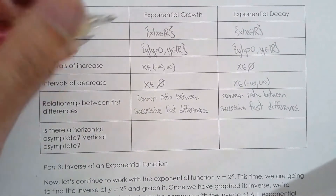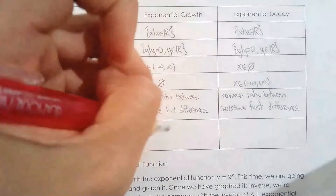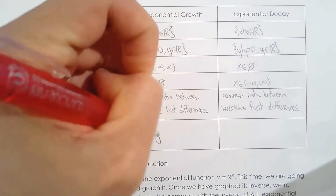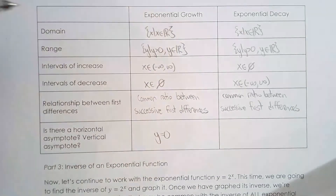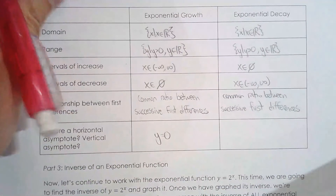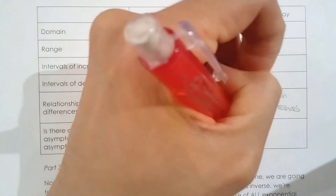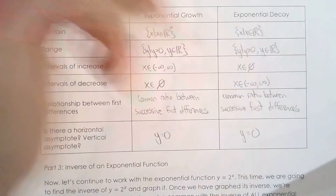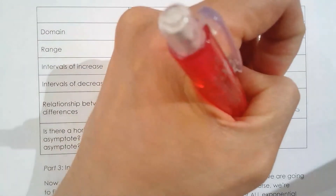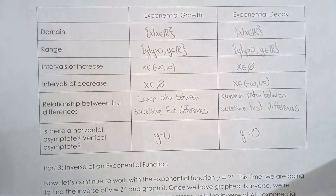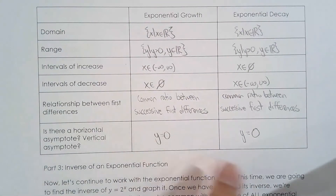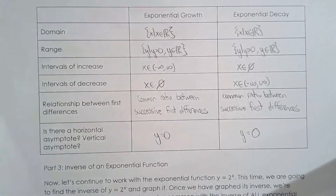For exponential growth and decay, there is a horizontal asymptote at y = 0. These properties can change if you transform the exponential function, which is something you also did in grade 11.